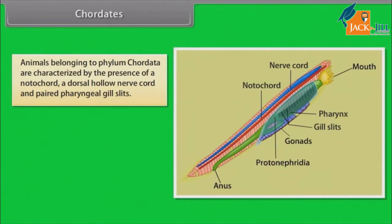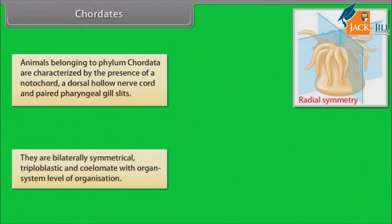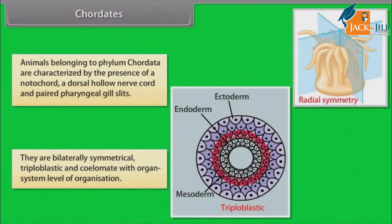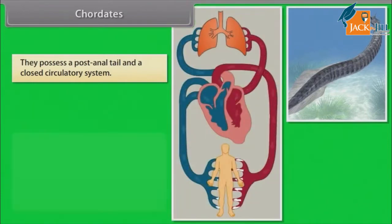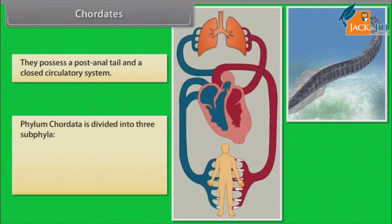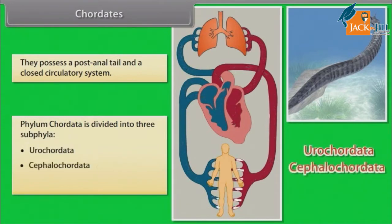Animals belonging to phylum Chordata are characterized by the presence of notochord, a dorsal hollow nerve cord and paired pharyngeal gill slits. They are bilaterally symmetrical, triploblastic and coelomate with organ system level of organization. They possess a post-anal tail and a closed circulatory system. Phylum Chordata is divided into three subphyla: Urochordata, Cephalochordata and Vertebrata.